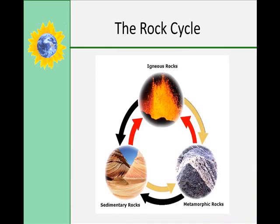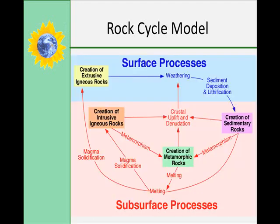The Earth has a limited supply of solid rock material that is constantly changing from one form to another. The rock cycle provides a useful model of these changes. This diagram illustrates a different type of rock cycle, in which you can see the processes that take place primarily at the surface of the Earth, also known as external processes, and separate from the ones that take place within the Earth, or internal or subsurface processes.